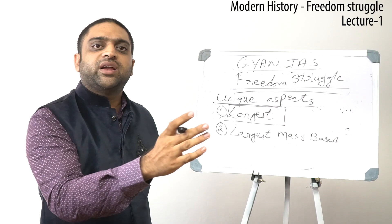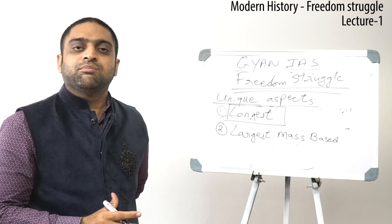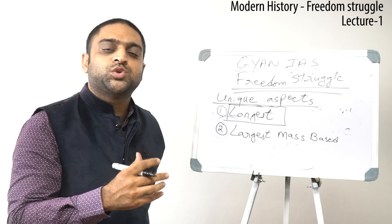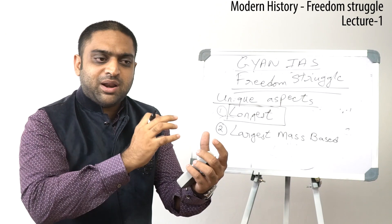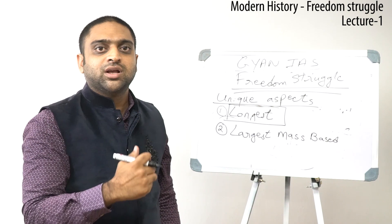The second phase, from 1905 to 1915, is called the Age of Extremists. This is when Lal, Bal, Pal and Aurobindo Ghosh — that is Lala Lajpat Rai, Bal Gangadhar Tilak, Bipin Chandra Pal, and Aurobindo Ghosh — came to leadership. In 1905 they started the Vande Mataram movement, also known as the Swadeshi movement. During this phase, the freedom struggle reached the urban masses, covering elite people and urban masses, but the grassroot level was still left — the freedom struggle had not trickled down there.